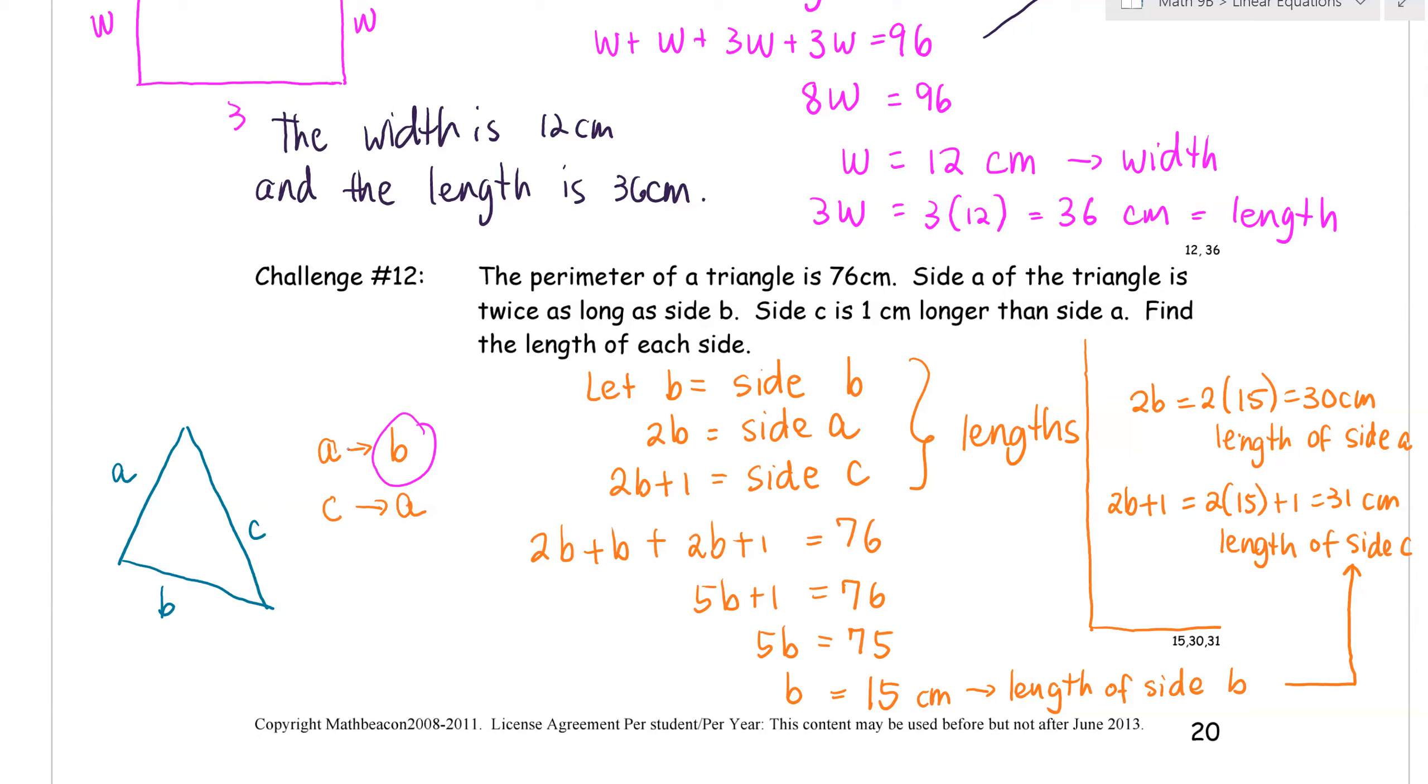So we're going to let B equal to the length of side B. And since side A is twice as long as side B, then it will be 2B. And side C would be 2B plus 1 because it's 1 centimeter longer than side A. And here we have side B plus side A plus side C is equal to the perimeter of the triangle. And the rest would be solving algebraically.